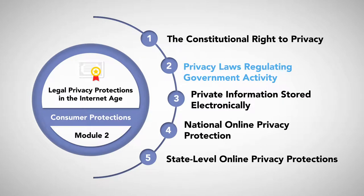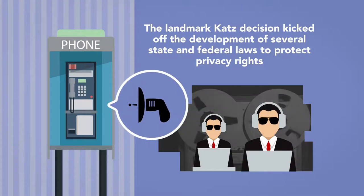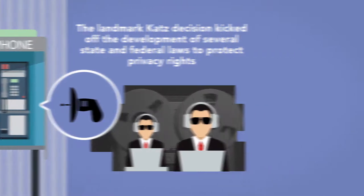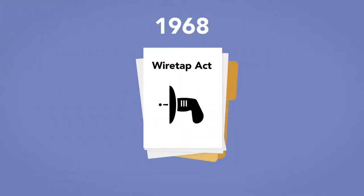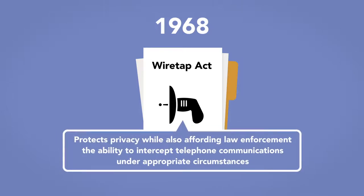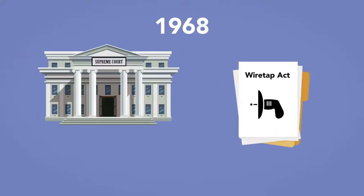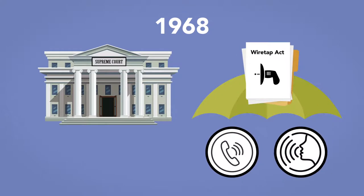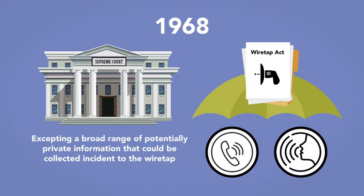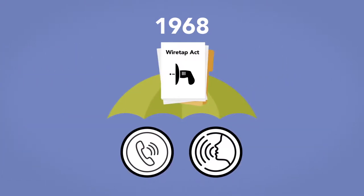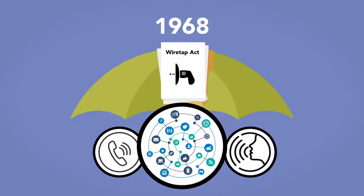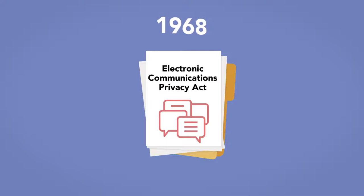The landmark Katz decision kicked off the development of several state and federal laws to protect privacy rights. In 1968, immediately following the Katz case, Congress enacted the Wiretap Act to protect privacy while also affording law enforcement the ability to intercept telephone communications under appropriate circumstances. However, the Supreme Court ruled that the act only covered the interception of telephone or oral communications, leaving a broad range of potentially private information exposed. This caused Congress to expand the protections of the Wiretap Act through the Electronic Communications Privacy Act of 1986.